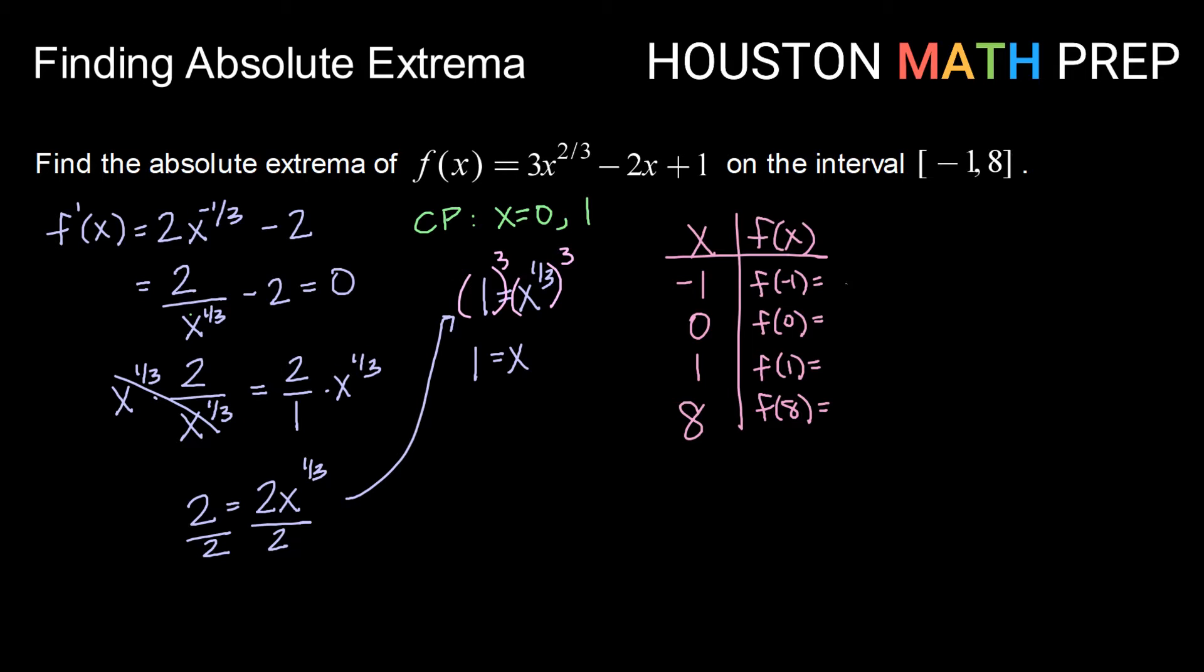Doing so, I get a y value of 6 for negative 1, 1 for 0, 2 for 1, and negative 3 for 8. Now I just want to analyze that information. The smallest y value gives me my absolute minimum. In this case, that is negative 3. So my absolute minimum occurs at the point 8, negative 3.